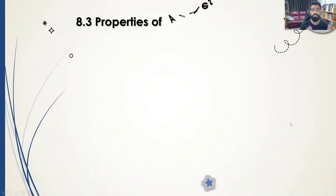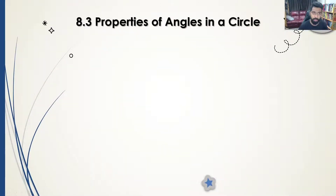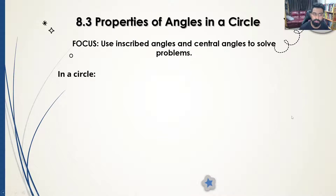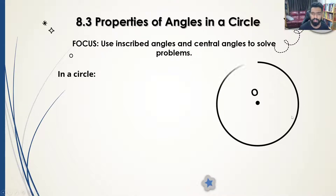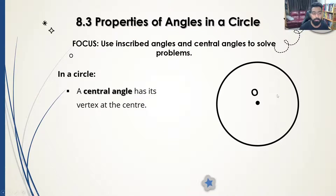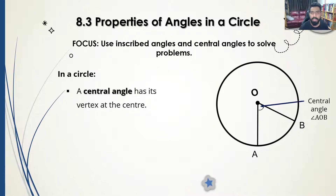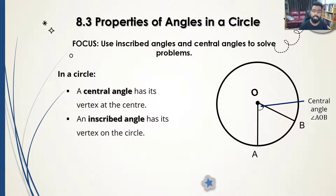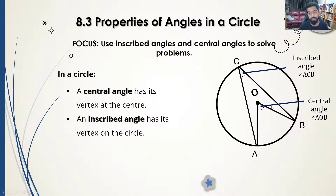Before we go forward, let's understand the basics of the properties of angles in a circle. Let's say we have a circle where the center is named O. The central angle will have the vertex at the center, and the inscribed angle will have the vertex touching the circumference of the circle.